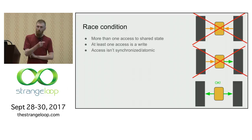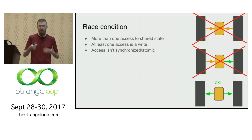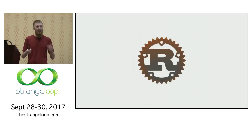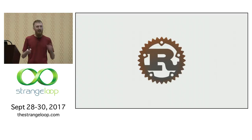In summary: race conditions — if you have more than one access from multiple threads, at least one of those accesses is a write, and those accesses aren't atomic or synchronized, then you have a data race. At least half of you came here to hear about Rust, so I'm going to tell you about it now.